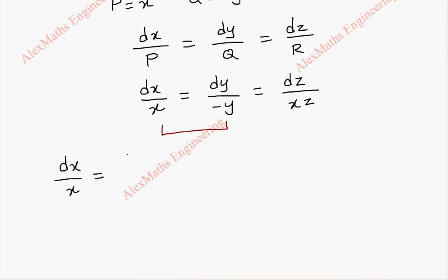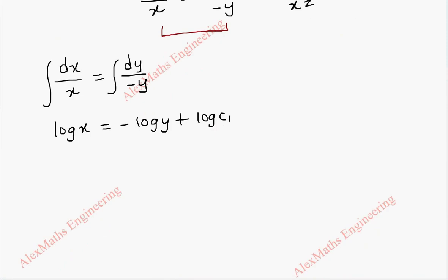This is in the variable separable form, x on one side and y on other side. So, directly we integrate. This becomes log x and this is minus log y. Since all the terms are log, instead of c1, we take log c1, the constant.